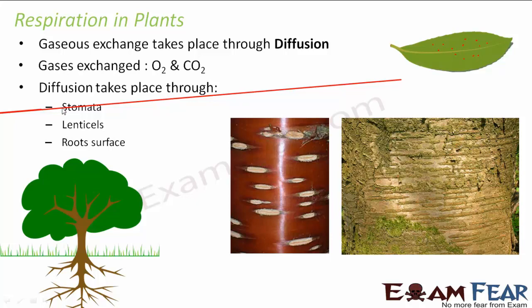Gaseous exchange can also happen through lenticels. Lenticels are porous tissue with cells having large intercellular spaces. On the bark of a tree you can see pore-like structures — you would have seen these in very old trees in your locality. These are known as lenticels. They are not actually pores themselves; they are tissue which have pores, which is why they are called porous tissue with cells having large intercellular spaces.